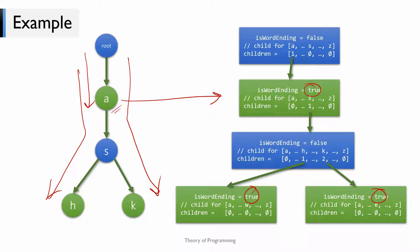Looking at another Trie tree example — by examining the green word-ending nodes, we find three words inserted: a single alphabet word 'a', 'ash', and 'ask'. At runtime: node A has isWordEnding true and a child corresponding to S. Node S has isWordEnding false and two non-null children for H and K. Nodes H and K have no children at all — all 26 references in their children arrays are null — and both have isWordEnding set to true.